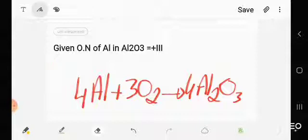So step one is to find the oxidation number of all elements present in the reactant and the product side.